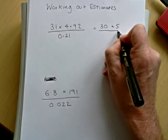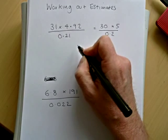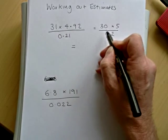And then on the bottom, 0.2. Now always show your working. If you don't get the full answer, you'll get some marks for what you've done.